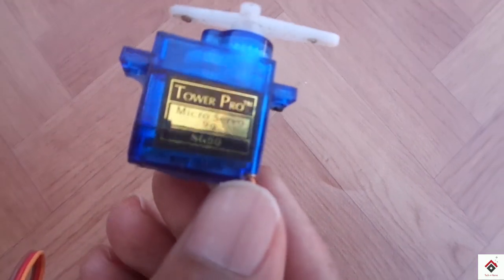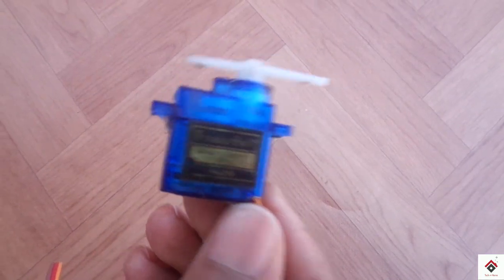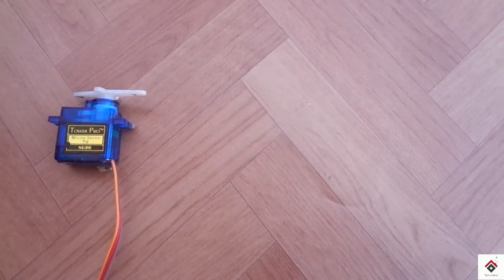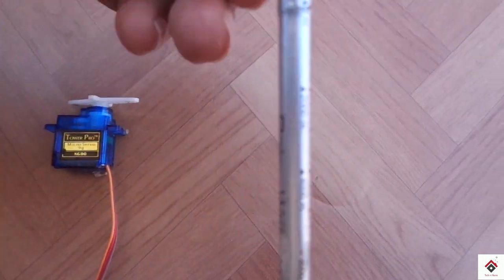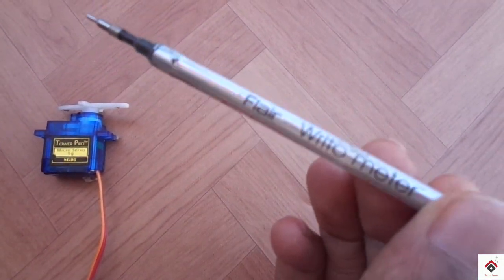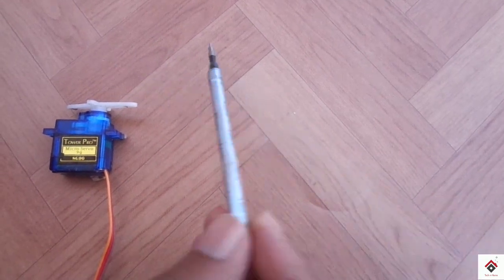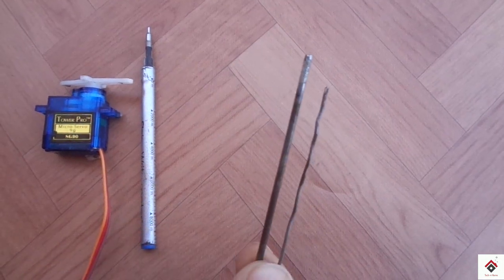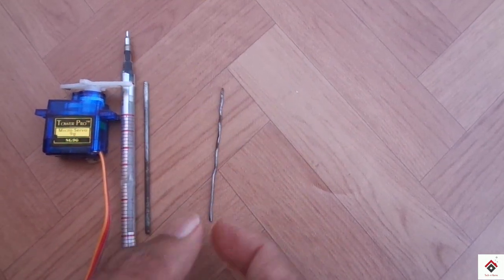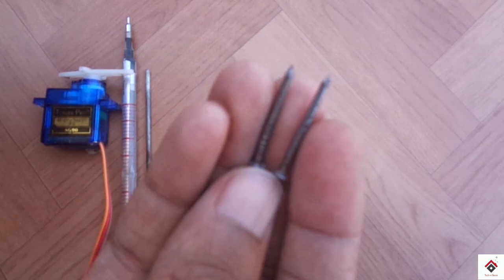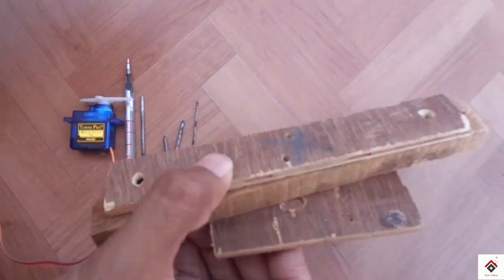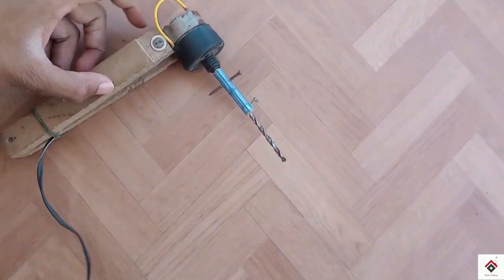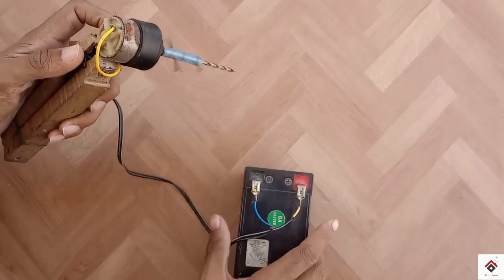I'm using an SG90 micro servo motor, but you can also go for bigger servo motors. You'll need a waste pen or refill, thin iron rods which can go inside the pen, a few nails, and some wood pieces. I'm making some holes in order to mount it on the drone.